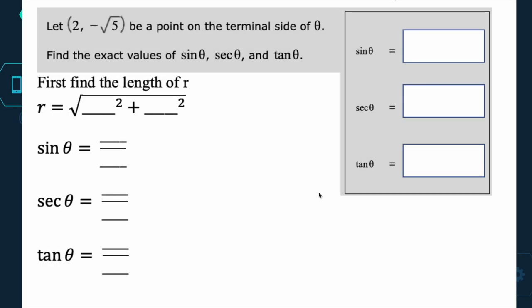Alright, so let's go ahead and apply this. So we have a coordinate (2, negative square root of 5). And that's going to be a point on a terminal side of an angle. Okay, so this is our coordinate. So find the exact values of sine, secant, and tangent.